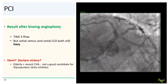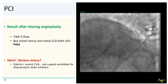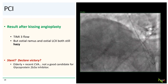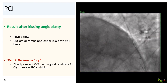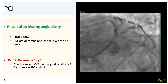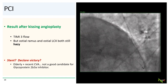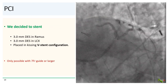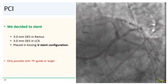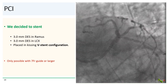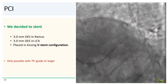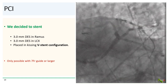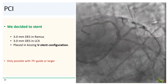So what should we do next? Should we stent, or should we declare victory and walk away? Remember that this is a 90-year-old patient with a recent CVA, so he is not a good candidate for a glycoprotein 2B3A inhibitor. So we decided to stent. We placed a 3.0 millimeter DES in the ramus and a 3.0 millimeter DES in the circumflex in a kissing V-stent configuration.